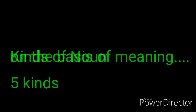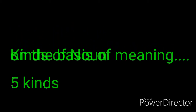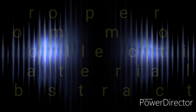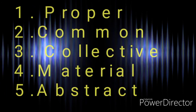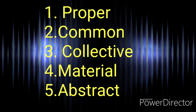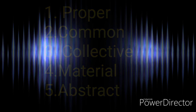Kinds of nouns on the basis of meaning. There are 5 kinds of noun on the basis of meaning: first, proper noun; second, common noun; third, collective noun; fourth, material noun; and fifth, abstract noun. In some books, we can see only 4 kinds of nouns — those books do not consider material noun as a kind of noun. But in most books, we can see 5 kinds of nouns.